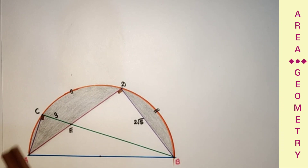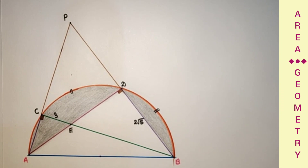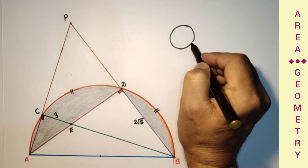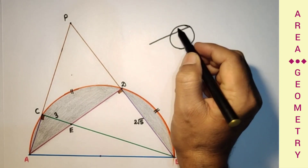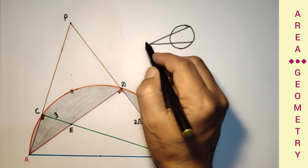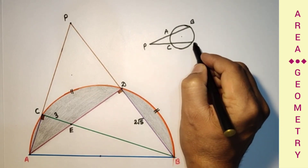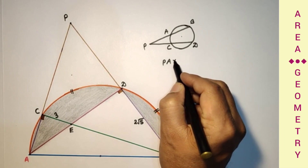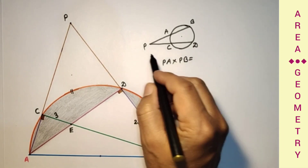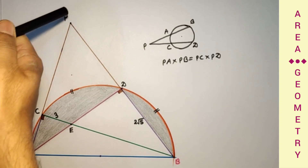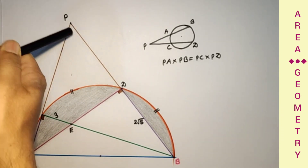Let us suppose the extended segments AC and BD meet at point P. For a circle, if we have two secants from an external point P, we can use the theorem that PA × PB = PC × PD. So here we can say that PC × PA is equal to PD × PB.